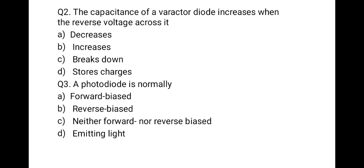The next question: the capacitance of a varactor diode increases when the reverse voltage across it — first decreases, second increases, third breakdown, last stores charges. When we increase the reverse voltage, capacitance decreases, and vice versa — when we decrease the reverse voltage, capacitance increases. So the correct option is A: decreases. The capacitance of a varactor diode increases when reverse voltage decreases.